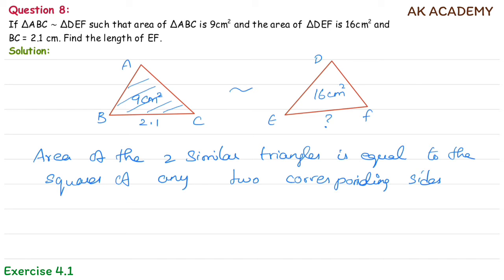So now we can write: area of triangle ABC divided by area of triangle DEF equals the square of the corresponding sides.